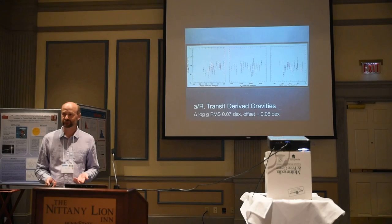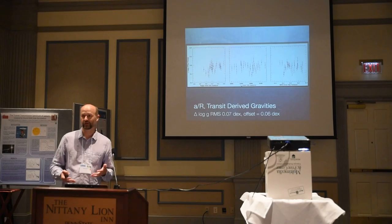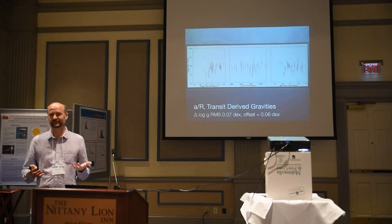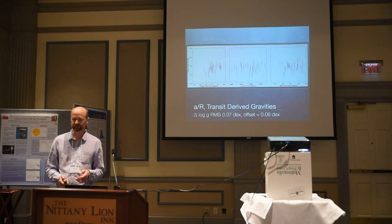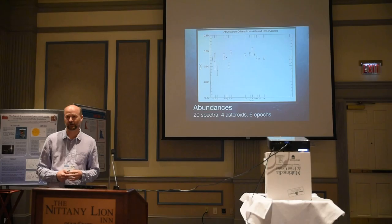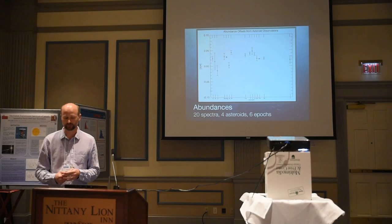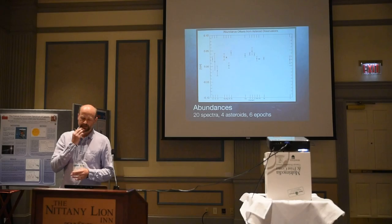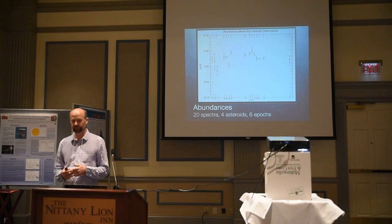As I mentioned in the beginning, composition and formation mechanisms are what I'm really interested in. One reason for getting accurate gravities — beyond getting accurate radii for planet characterization — is to get the compositions of the stars, assuming that reflects the initial disk composition and what the planets had to start with. I have a sample of 20 asteroid spectra, assuming we know roughly the composition of the Sun, and I'm recovering the composition for 15 elements to pretty good accuracy with slight offset and low scatter.